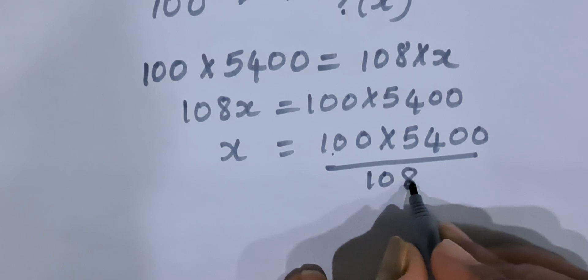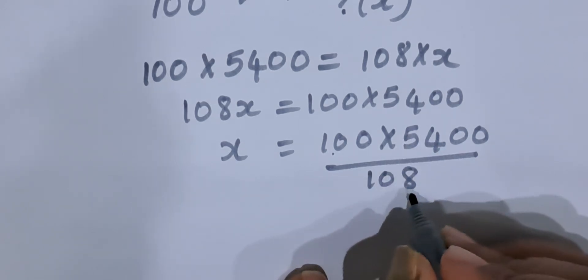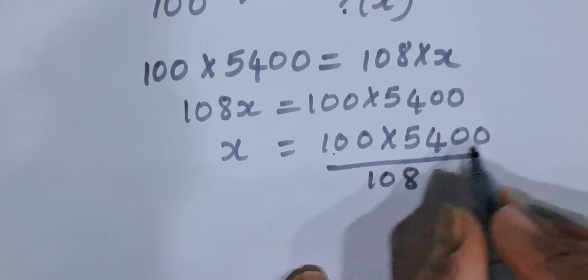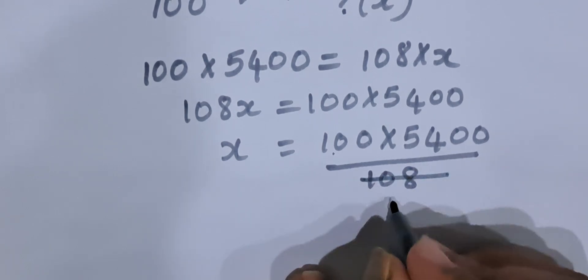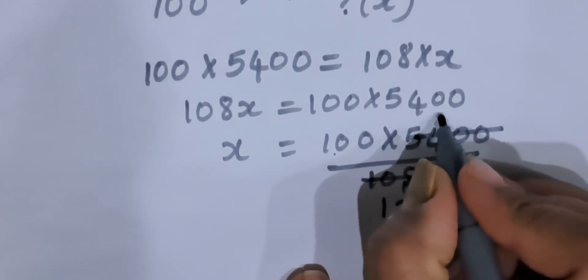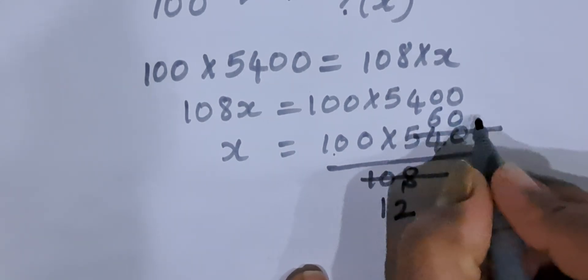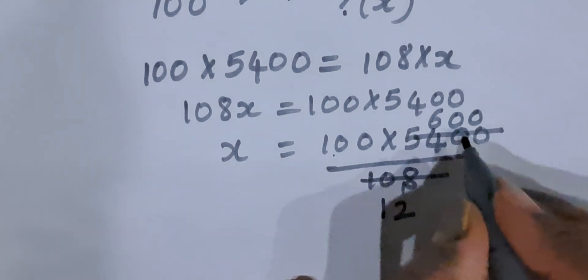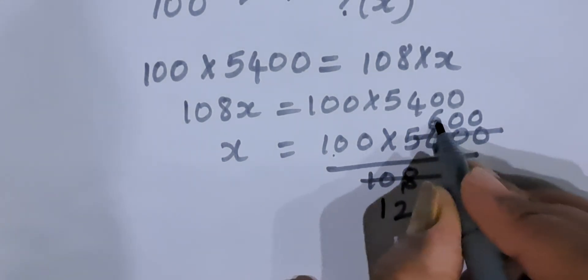Now 1 plus 8 is 9, 5 plus 4 is 9. So these both get multiplied with—these both can be divided by 9. 9 ones are 9, 9 twos are 18, 9 sixes are 54, double zero as it is. So 600 upon 12.